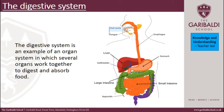So the digestive system — we have gone through quite a bit of it. It's an example of an organ system in which several organs work together to digest and absorb your food. You can have a look at the diagram here. Today we are going to be looking specifically at the liver, the gallbladder, and the stomach.